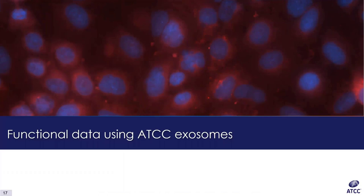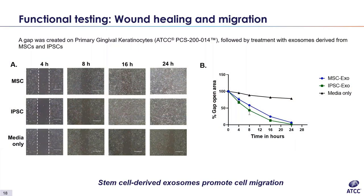After thoroughly characterizing our exosomes, we decided to test their functionality in functional studies. One of the first validation assays we performed was the scratch assay. We cultured primary gingival keratinocytes in cell culture plates, then scratched to create a gap. Cells were treated with 100 micrograms per milliliter protein-equivalent concentration of exosomes from different cell types. Images were acquired over time under a phase contrast microscope, and the gap width was measured to generate the graph. Both MSC and iPSC exosomes promoted cell migration and gap closure compared to untreated cells, suggesting that ATCC exosomes are functional in in vitro assays.